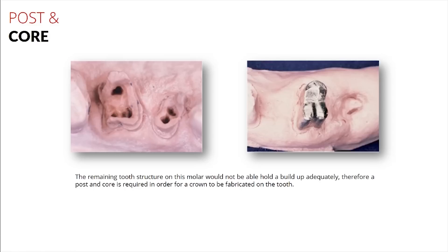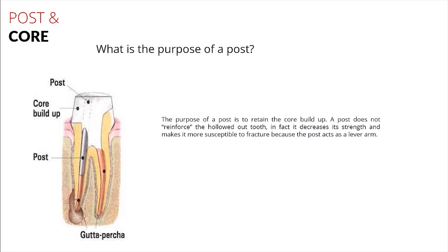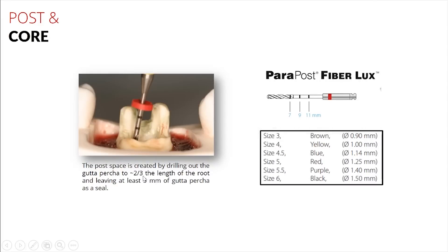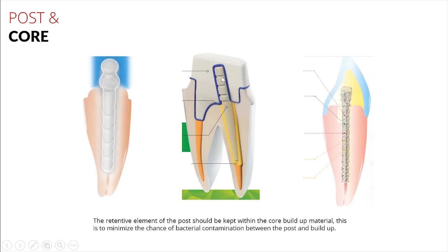That's where this idea of a post and core comes in. Here's another view of a typical example where you can see the tooth is so badly broken down that it doesn't have a lot of natural tooth structure to hold the core buildup in. Even if we assume this is a composite buildup, one would argue: couldn't we just bond this composite into these walls and have the composite hold on to that tooth structure? What you need to think about is that the majority of the bond to composites is to the dentin structure, which is significantly weaker than a bond to enamel.